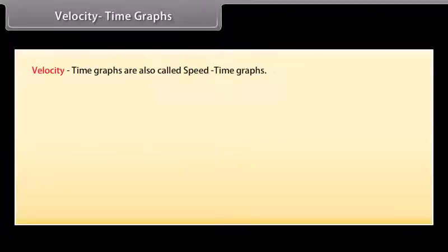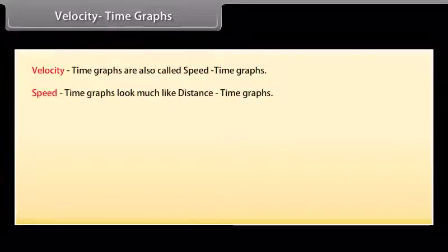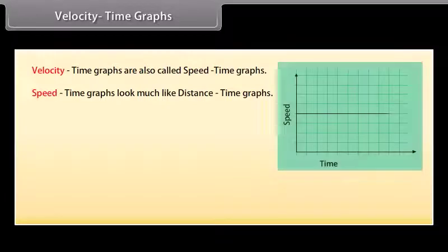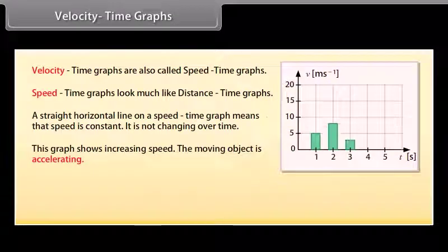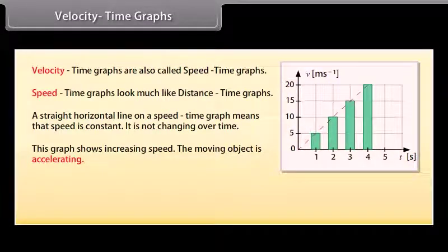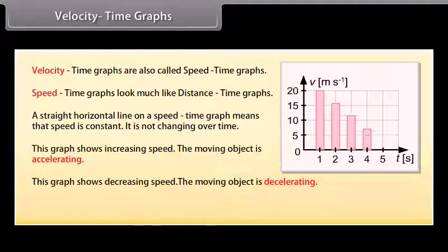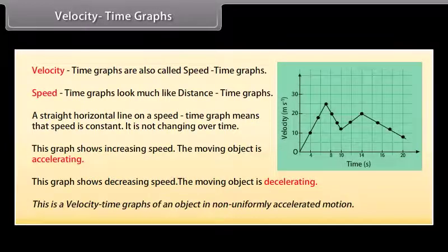Velocity-time graphs, also called speed-time graphs, look much like distance-time graphs. Time is plotted on the x-axis; speed or velocity is plotted on the y-axis. A straight horizontal line means speed is constant — not changing over time. An upward-sloping graph shows increasing speed — the object is accelerating. A downward-sloping graph shows decreasing speed — the object is decelerating. A curve on a velocity-time graph represents non-uniformly accelerated motion.